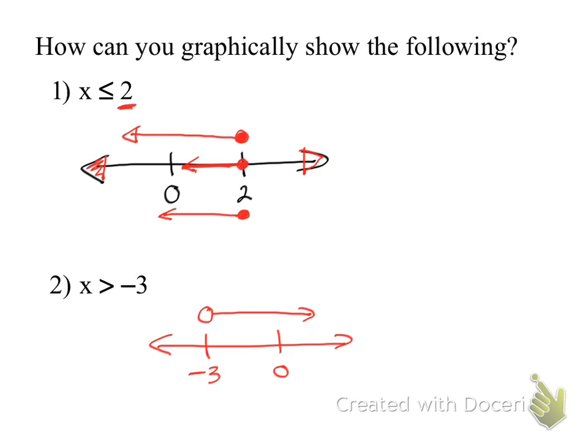Any questions? A solid circle is because of this little bar underneath — that means 'or equal to.' The one thing I want you to remember is: what numbers are in this solution set? What are all the numbers less than or equal to two? Two is in that solution set, one is in that solution set, zero, negative 1.9999 — that's in that solution set.